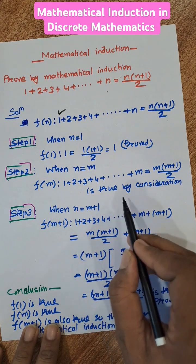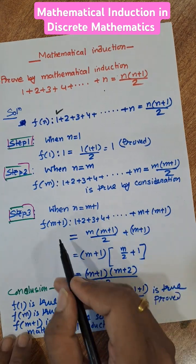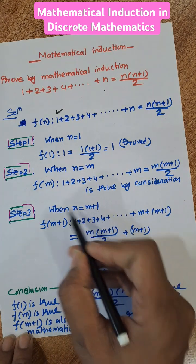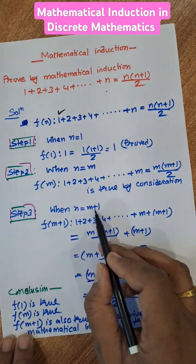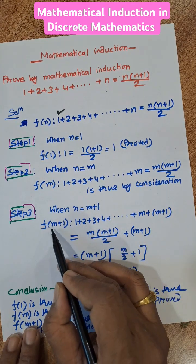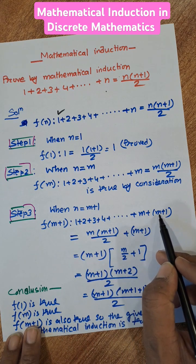Now step 3 we need to prove for m plus 1. So first of all n equal to 1, then n equal to m, then we need to prove n equal to m plus 1. Now m plus 1 means 1 plus 2 plus 3 plus dot dot m and the next term will be m plus 1.